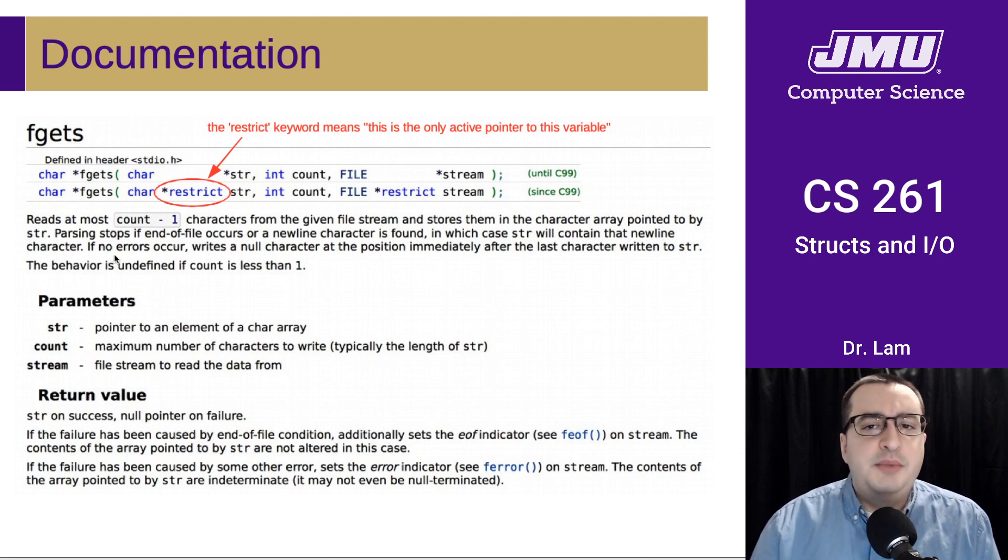And that's fine, because we're going to want to print that new line as well. So if no errors occur, it writes a null character at the position immediately after the last character written to str. The behavior is undefined if count is less than one, well, we're not going to be sending a count that is less than one. So we don't have to worry about that. So here are the parameters. So str is the pointer to the element. This is essentially going to be our buffer, right? This is where we want to write the data to. Count is the maximum number of characters to write. So this is typically the length of str, which you'll remember for us as a constant that we defined. And then stream is the file stream to read the data from which in our case is just going to be stdin standard input.